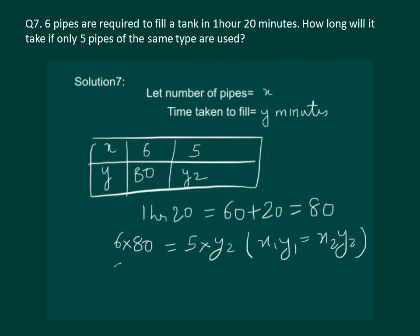On solving further, we get y2 and hence y2 comes out to be 96. That means 96 minutes are required to fill the tank if 5 pipes are used.